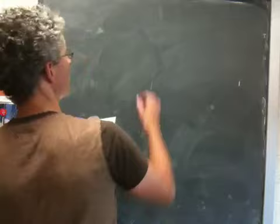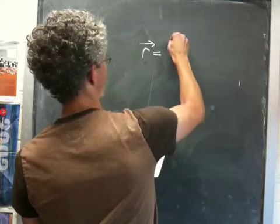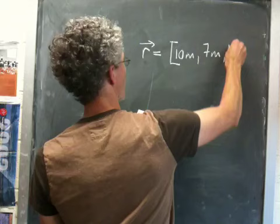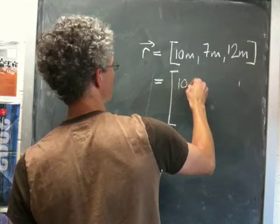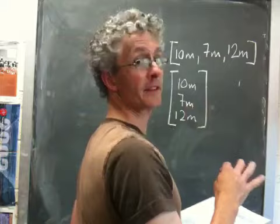An orangutan is located at—so this is its position vector, don't forget—an orangutan is located at 10 metres, 7 metres, 12 metres. And that's just the same as writing it as a column vector: 10 metres, 7 metres, 12 metres.